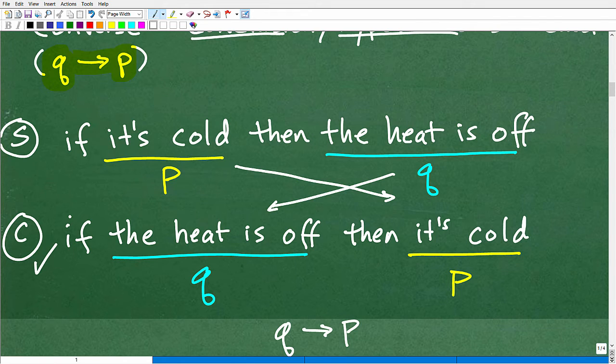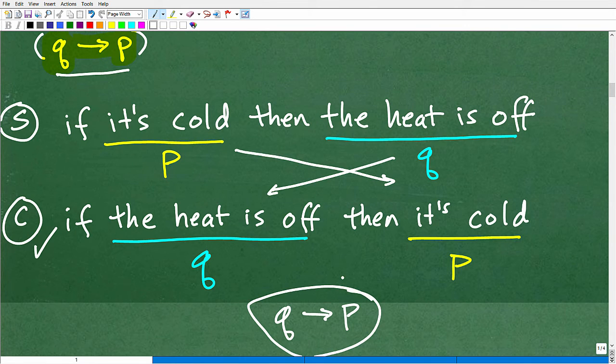So again, the converse, all we do is take a conditional statement and we switch the conclusion on hypothesis. And that new statement is called the converse. And all we do, that notation is Q implies P. And that's what we have right here. So that is the converse.